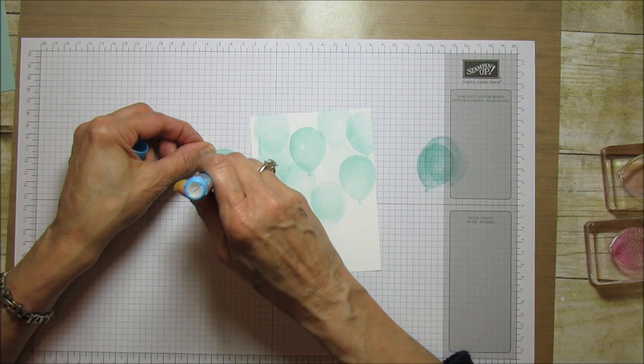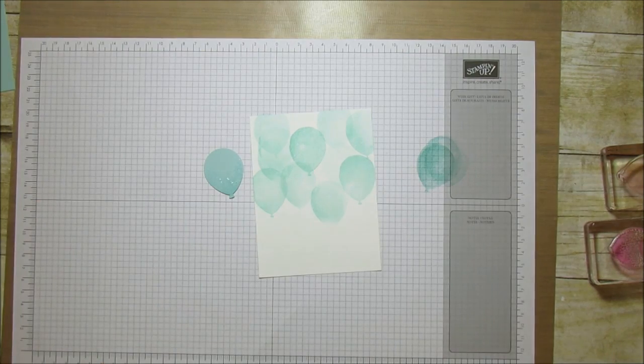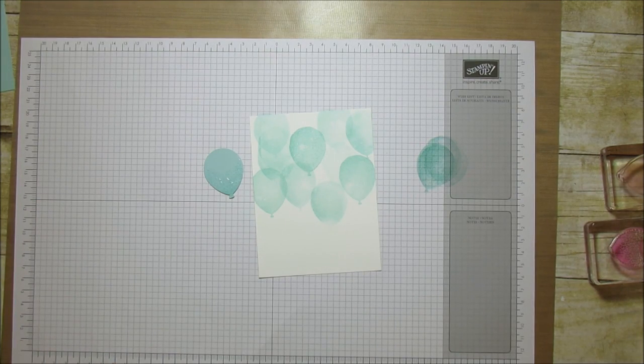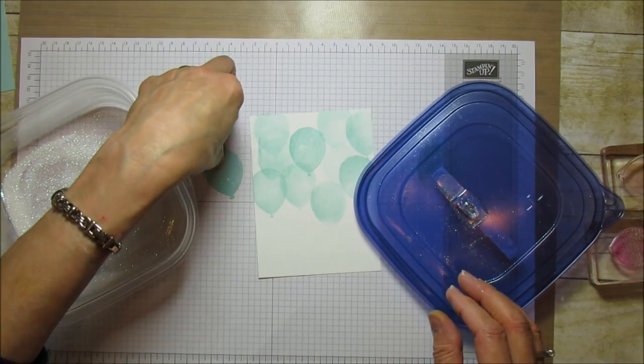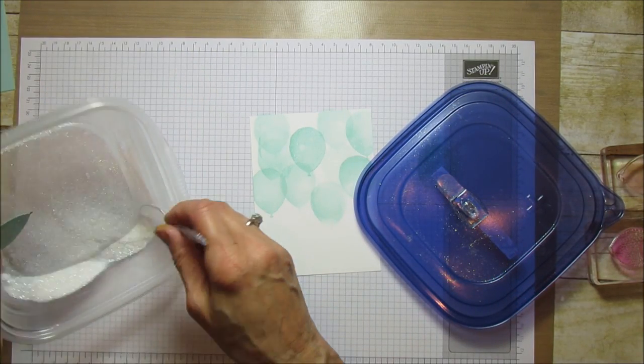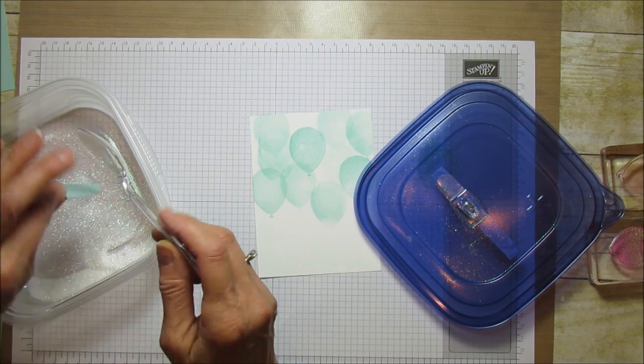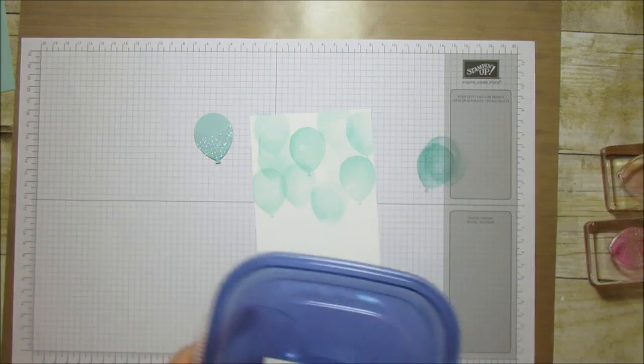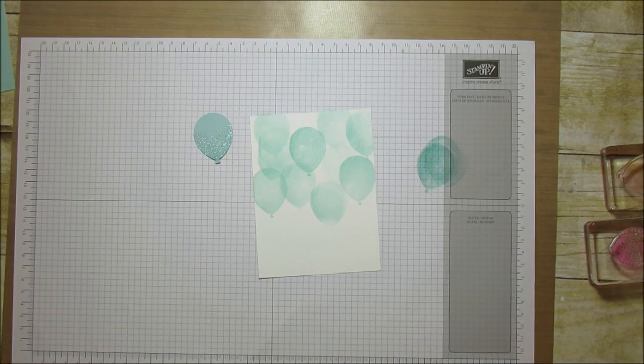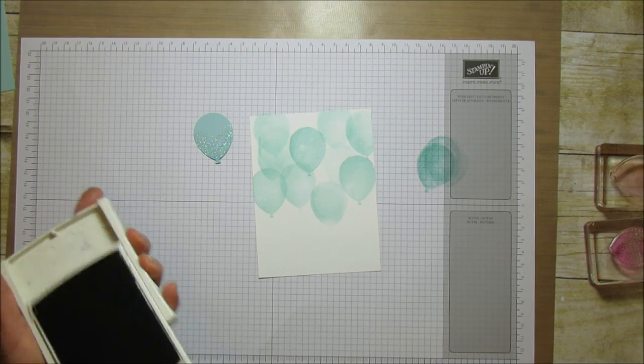Then I'm going to use some of our Dazzling Diamonds glitter and we are going to put it on here just to give a little bit of dazzle to the balloon. So pretty. I'm going to grab some Basic Black and we are going to put our string on.